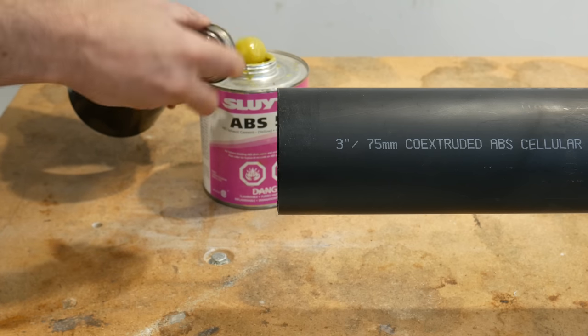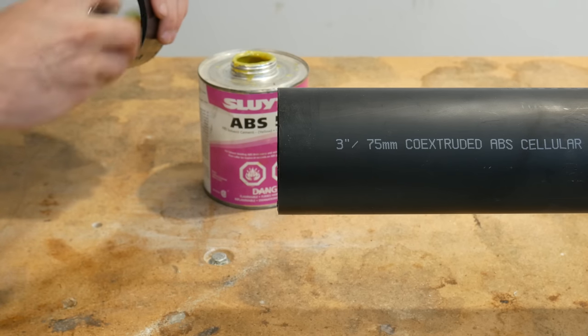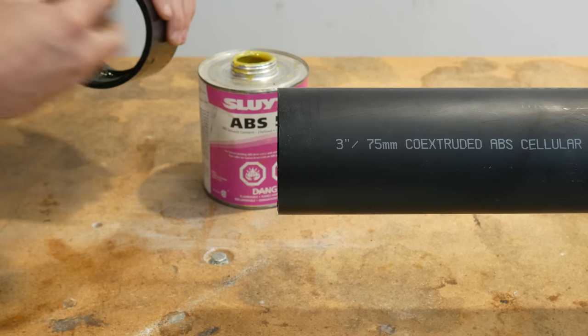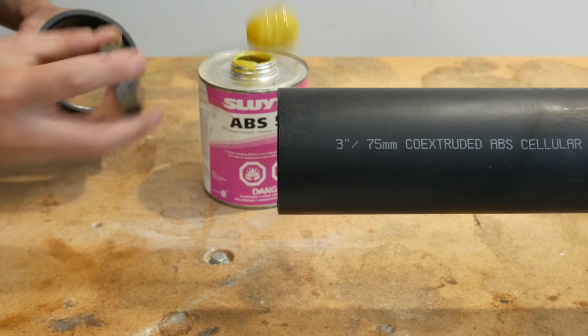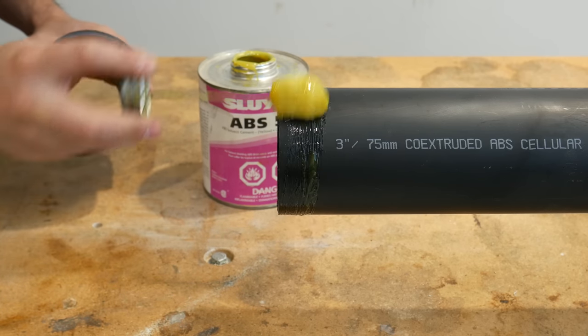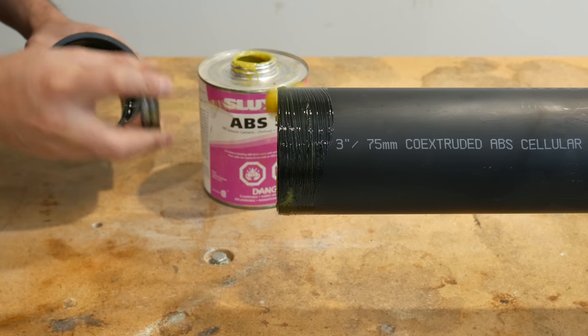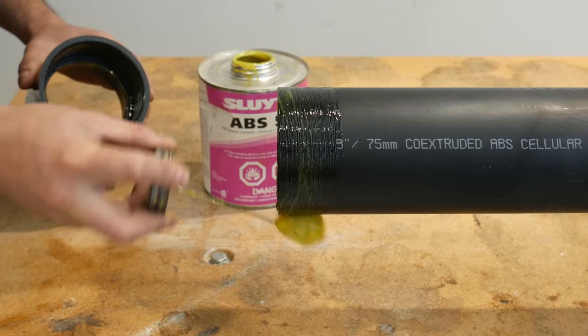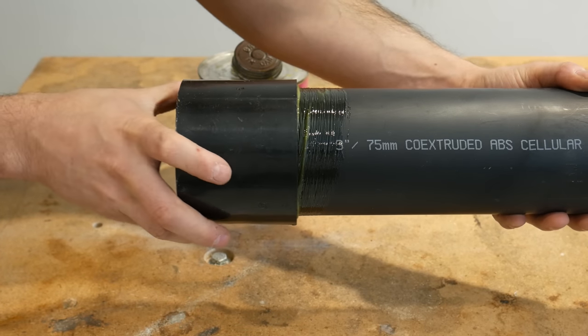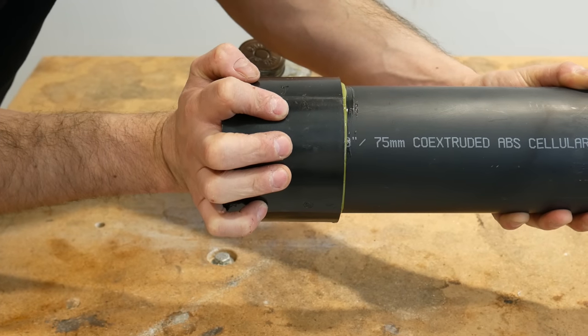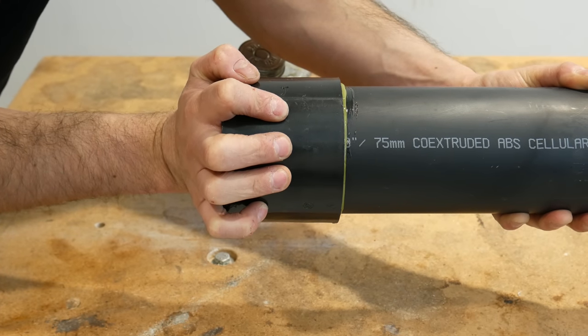Number eight is applying glue to either the fitting or pipe, but not both. The glue or cement acts as a lubricant to ensure full penetration, as simply inserting them dry all the way is pretty tough. On bigger fittings such as three inches and up, it's important to cover both the pipe and fitting hub thoroughly as to not get any dry spots.